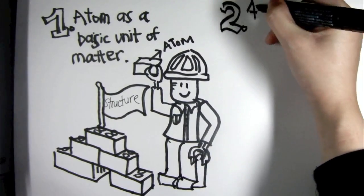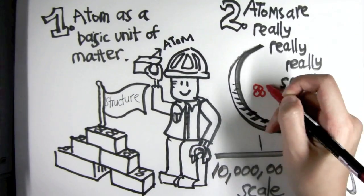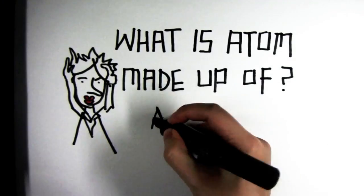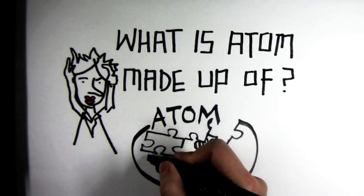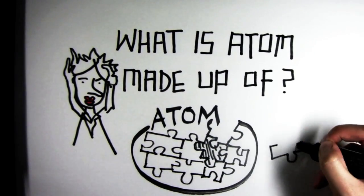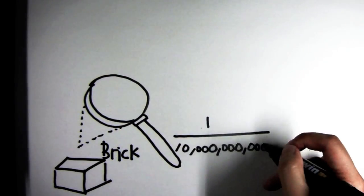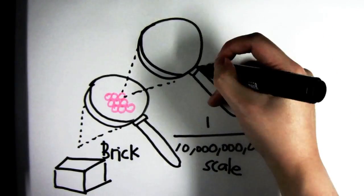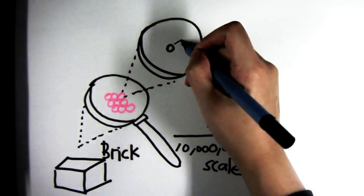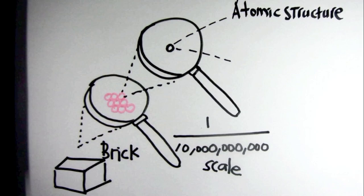Atoms are extremely small. Now that we have learnt this, let's stop and think about it. What are these tiny particles called atoms really made up of? Let's take a look at a regular brick. Magnify it by 10 billion times, we are able to see that it is made up of many atoms. So now let's magnify it even further and see what is inside just one atom.